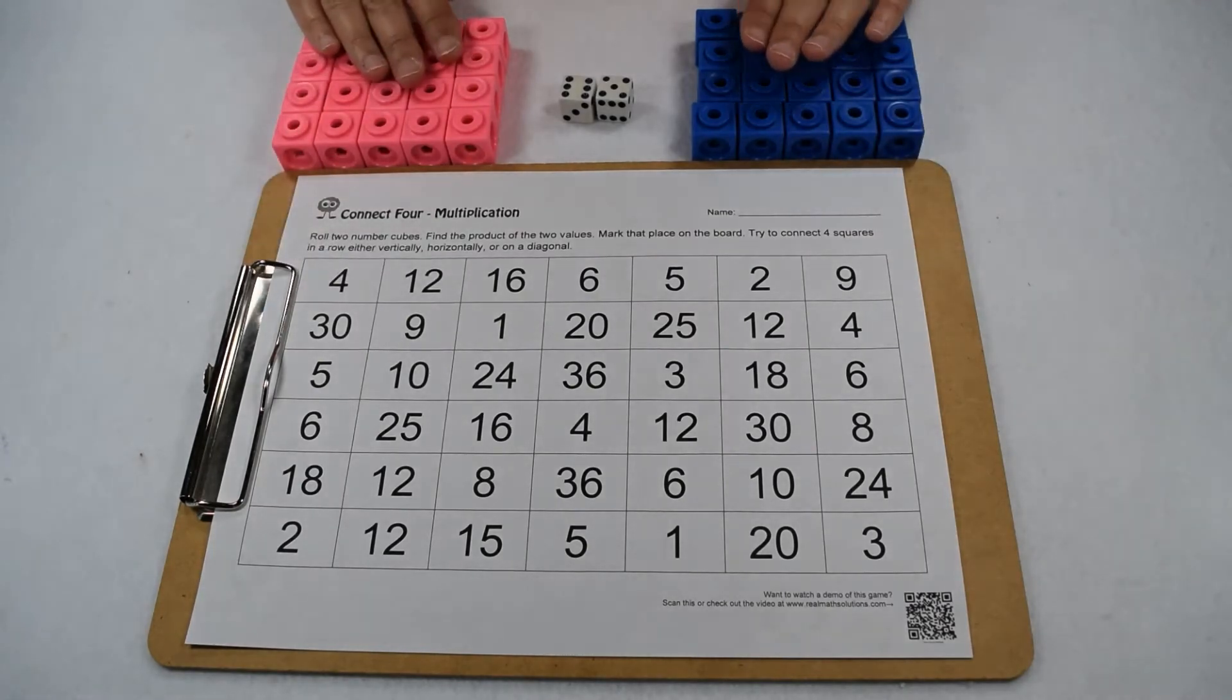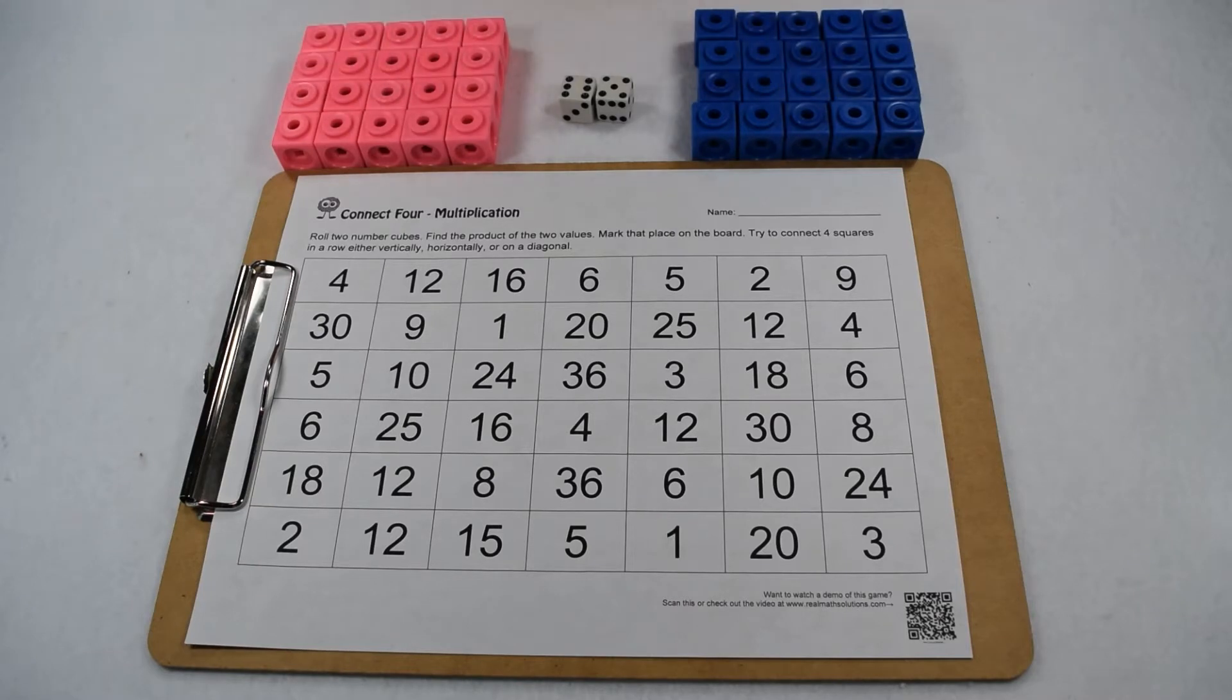Each player needs a different color marker, about 20 of them. Here we used unit cubes, but really you can use two of anything as long as they're different colors.